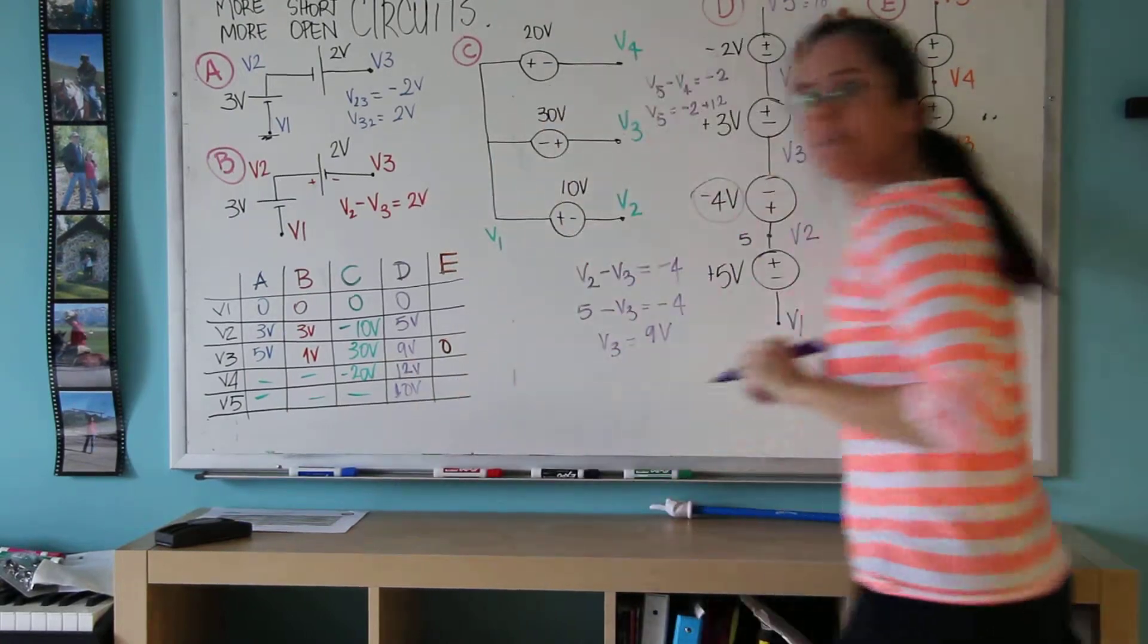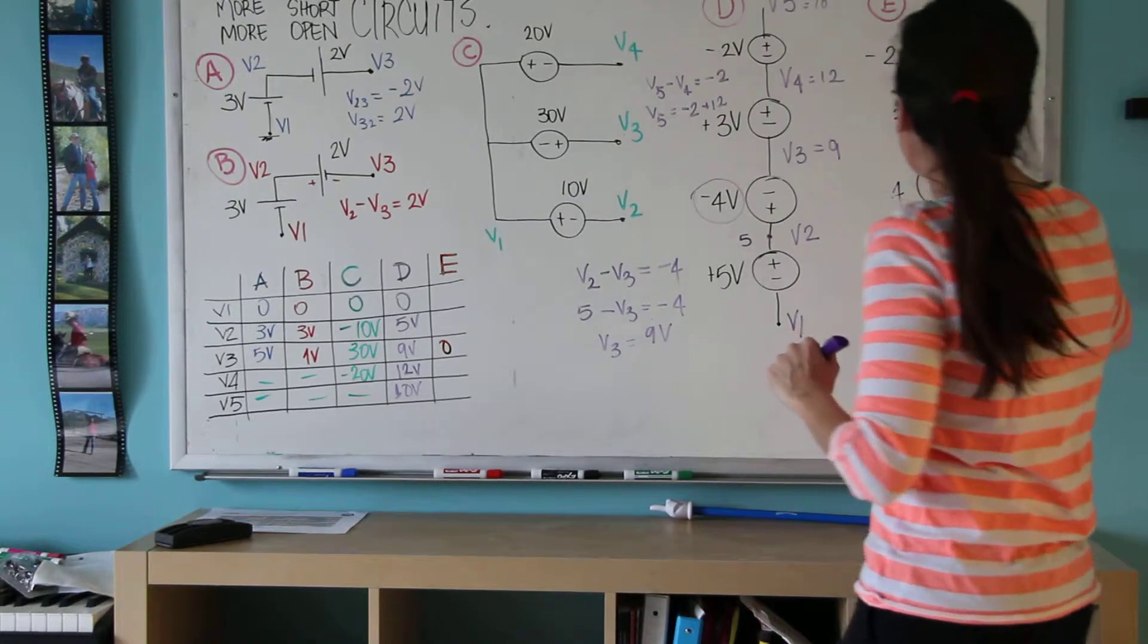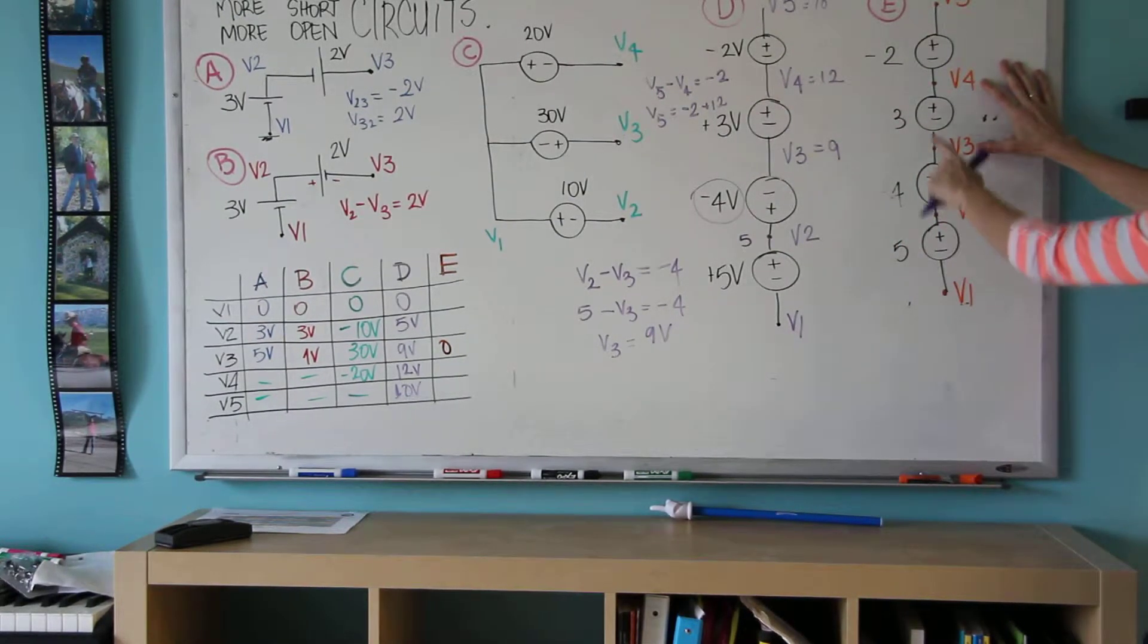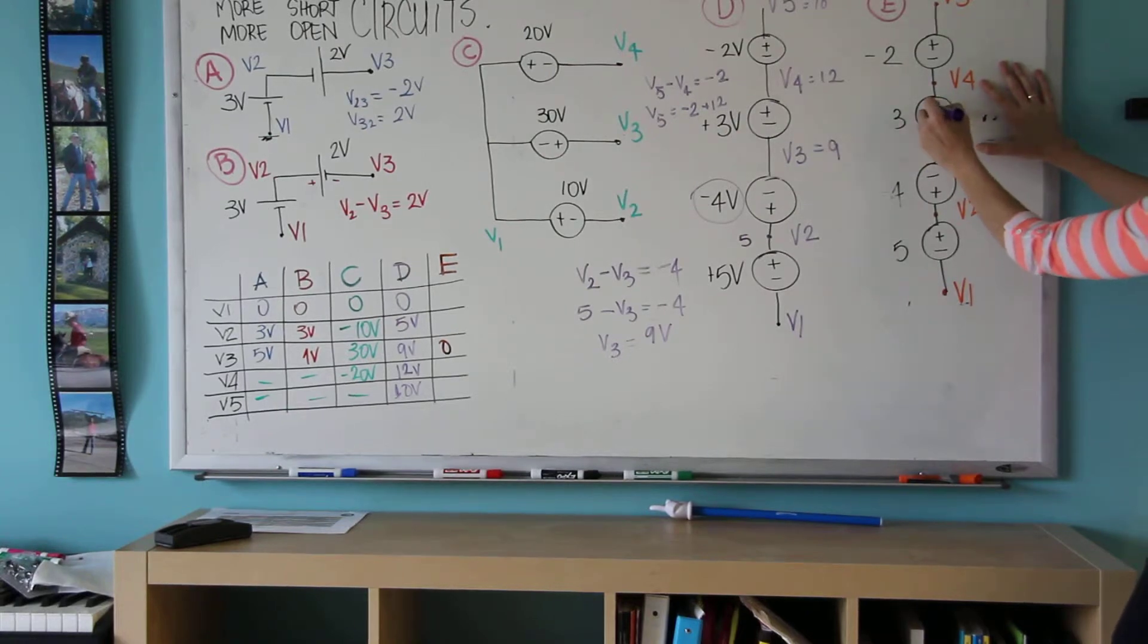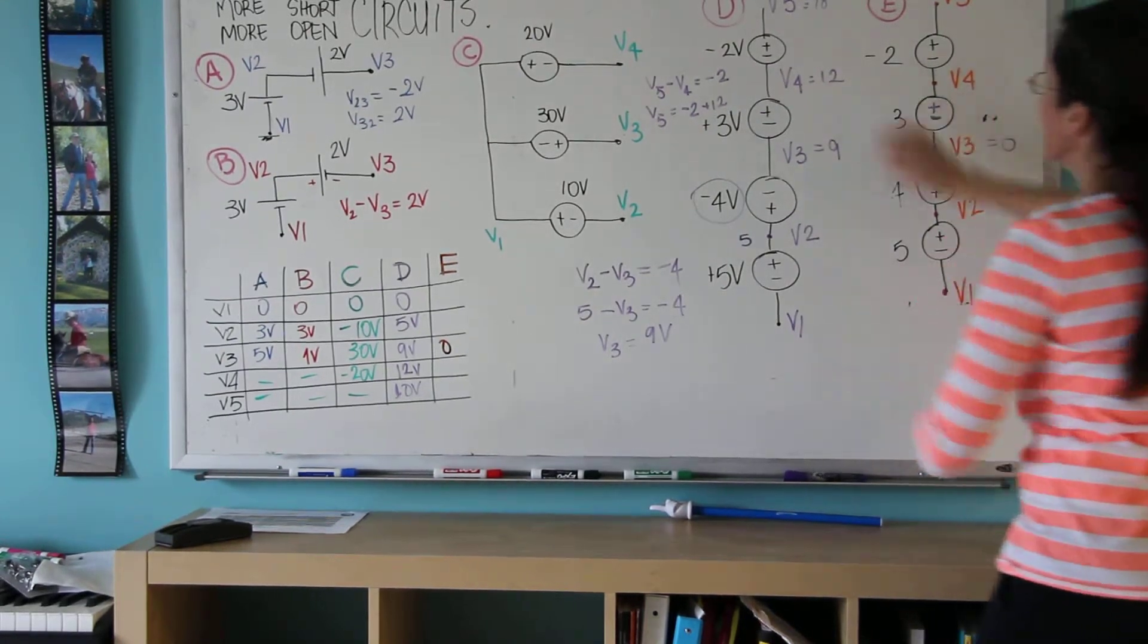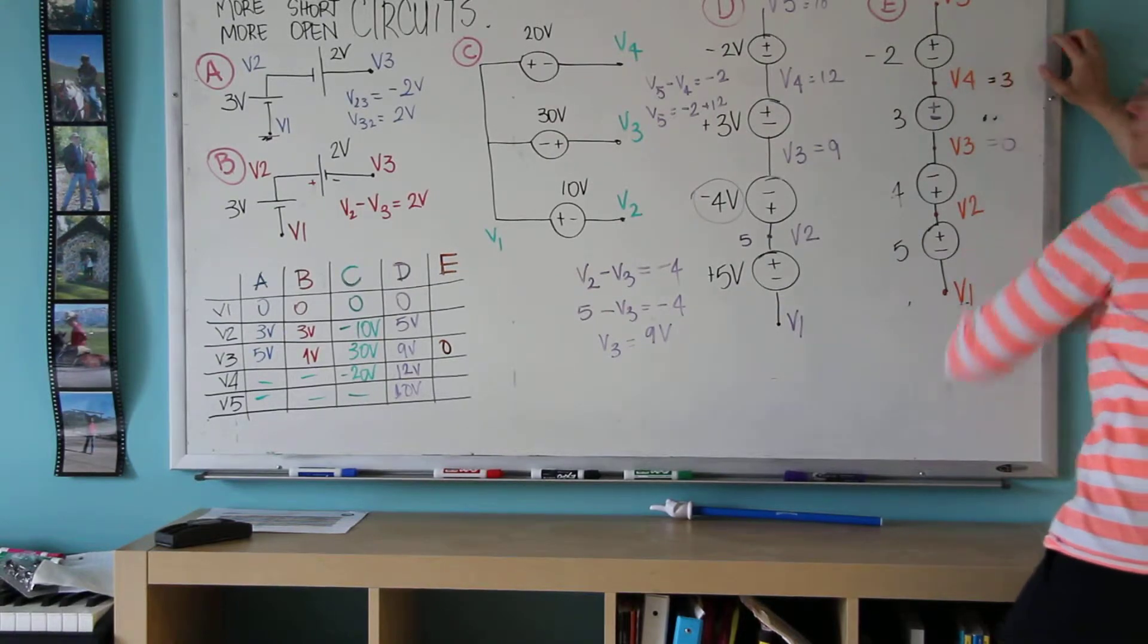And now this is the last circuit, hanging there with me. This V3 is 0. V4 minus V3, and I'm calling V4 minus V3 because this is plus and this is minus, V4 minus V3 equals whatever number says here, which is 3 volts. And therefore, I'm going to call V4 3 volts.